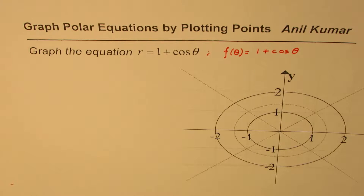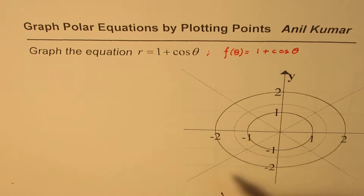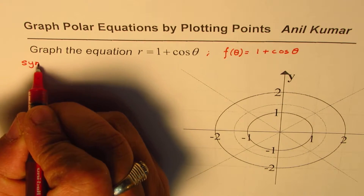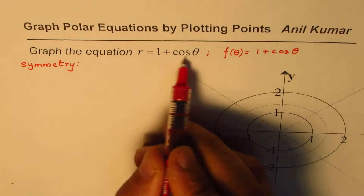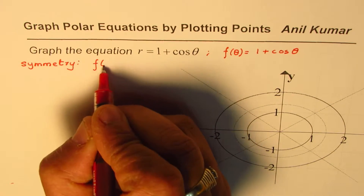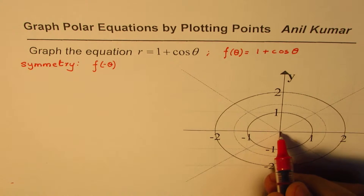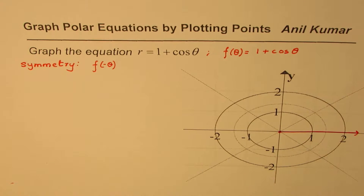To start, what theta points should I take to find points so we can connect them and sketch a graph? Well, we should look into symmetry. If we have some kind of symmetry we can restrict the points. Cosine is an even function, so that gives you an idea that probably f of minus theta equals f of theta, and in that case we will have a symmetry about the polar axis.